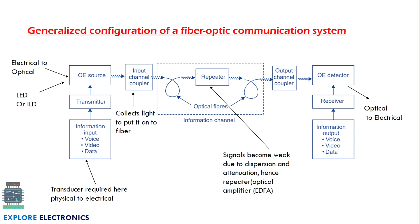The output channel coupler performs the reverse functionality of the input coupler — it receives the signal as light and gives that light information to the OE detector. The OE detector converts the optical signal back into an electrical signal, which is what is required to represent at the output side. If any amplification is required, that will also be done at the receiver.